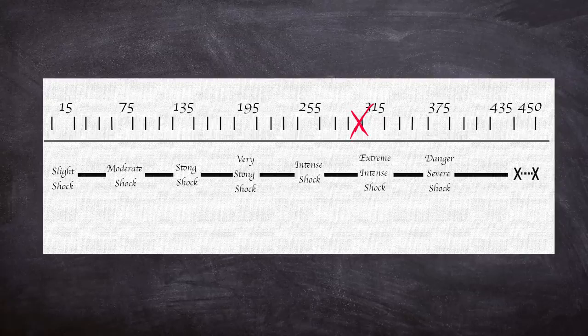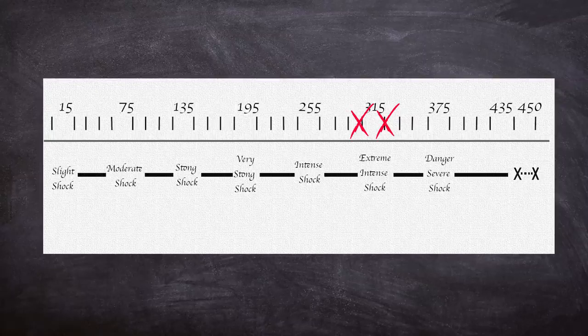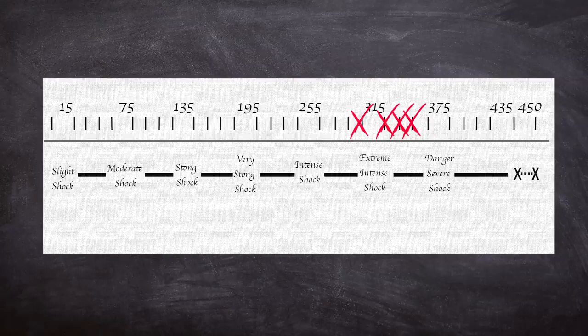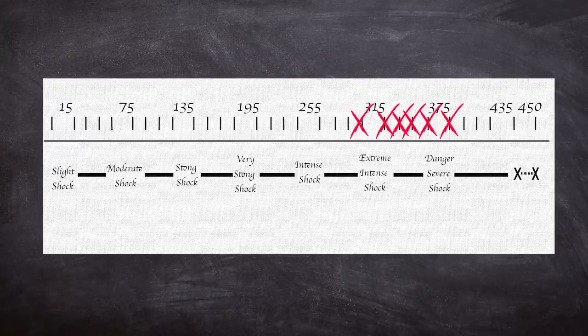Four more went on to shock the learner one more time and then also refused. Two stopped at the 330-volt level, and one each at 345, 360, and 375 volts respectively, meaning that only 14 refused the experimenter's prods.